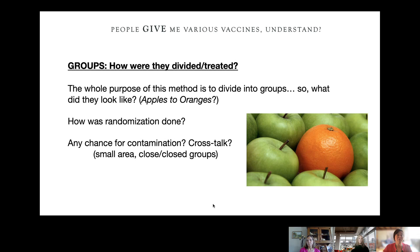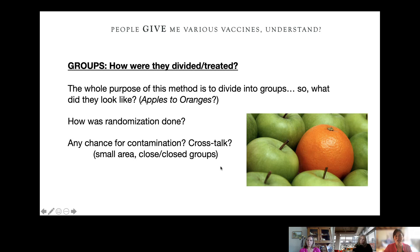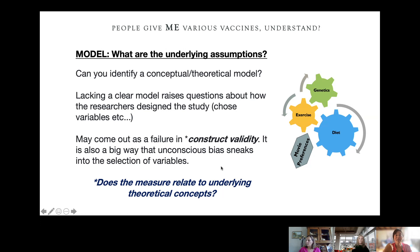You also want to look at whether there was any chance for contamination or crosstalk, which can happen in small areas or closed groups. For example, if nursing staff work across clinic sections in different locations, it's possible that nurses who live between those two sites work at both, and the intervention being enjoyed at one site might be talked about at the control group site, potentially contaminating the results.